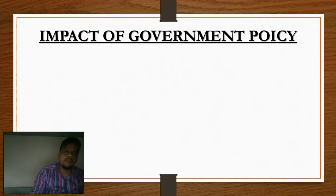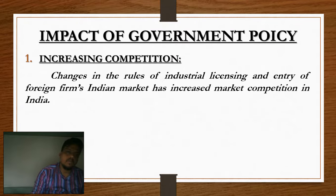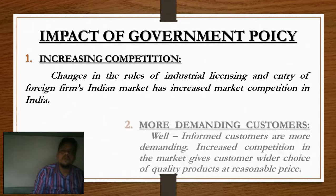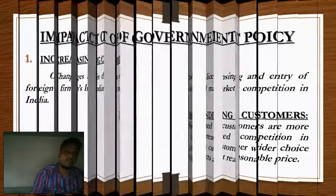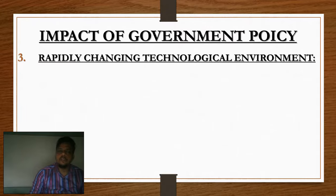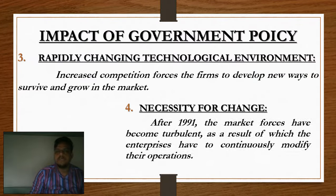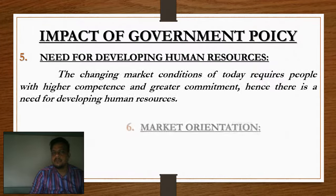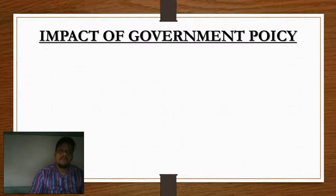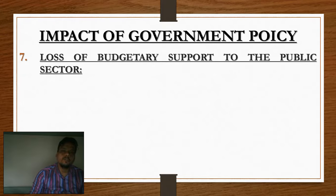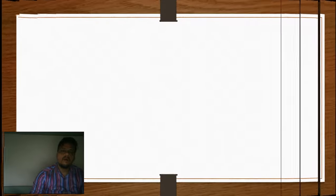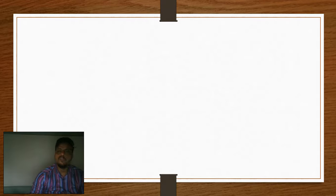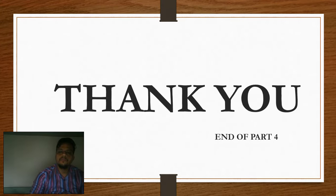We have seen all the points today. Point one: increasing competition. Point two: more demanding customers. Point three: rapid change in the technological environment. Point four: necessity of change. Point five: needs of developing human resources. Point six: market orientation. Point seven: loss of budgetary support to the public sector. We have completed our revision part and the chapter revision is over. Thank you.